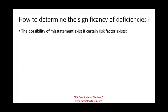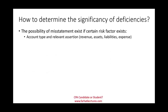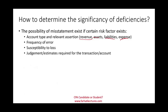Additional risk factors include: the account type affected and the relevant assertion — for revenues we worry about overstatements, for liabilities and expenses our concern is completeness or understatement. We also look at the frequency of errors, susceptibility to loss, judgment estimates required for transactions, and the interrelationship between controls and among deficiencies. If controls are pervasive across many areas, the severity is greater. One deficiency alone may not be significant, but in combination they could be severe and material.